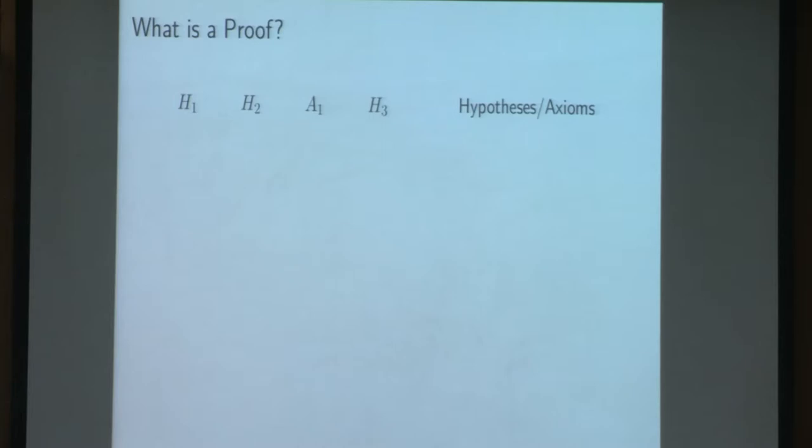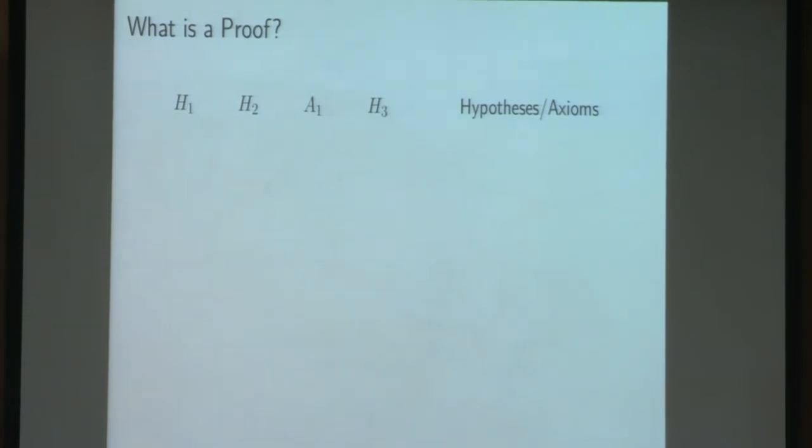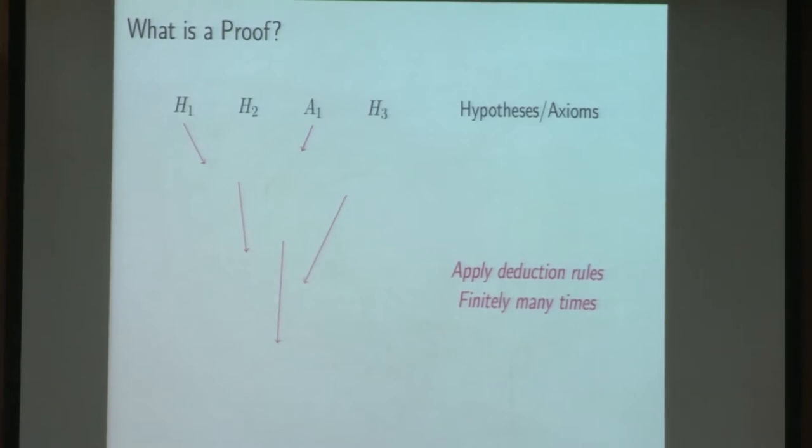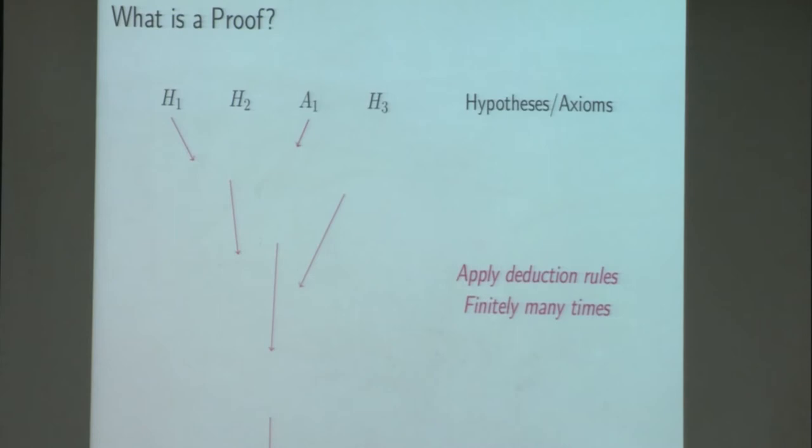Let's begin this talk by looking a bit at what is a proof. So usually what we do when we do a proof, we have a bunch of hypotheses or axioms. We apply some deduction rules finitely many times. And so we end up with a conclusion and we call this a proof.